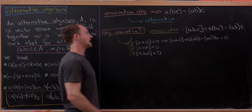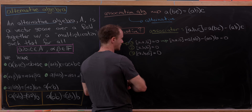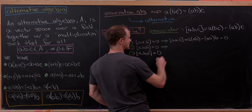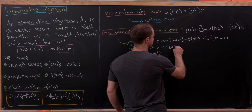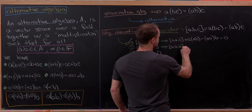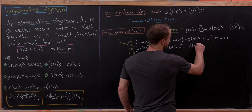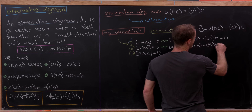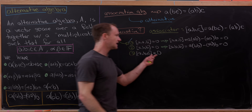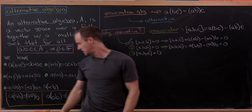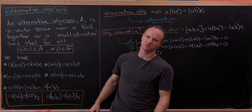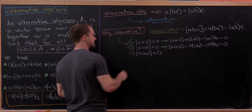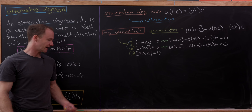Now let's look at ABB. That's going to be A times BB minus AB times B, which is equal to zero because of the right-hand alternative rule. So that condition is also satisfied.